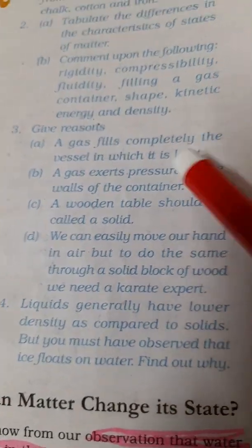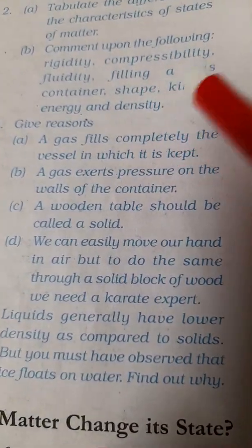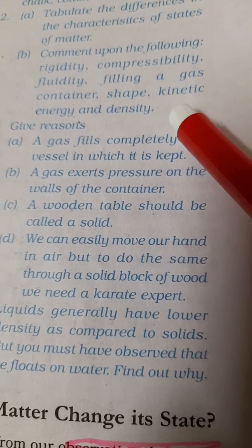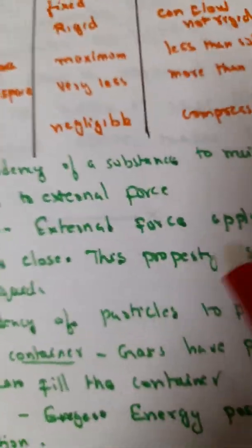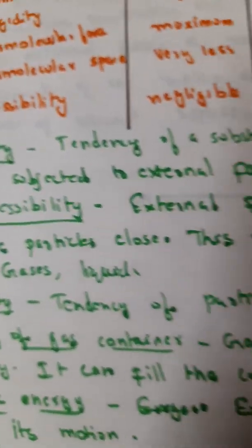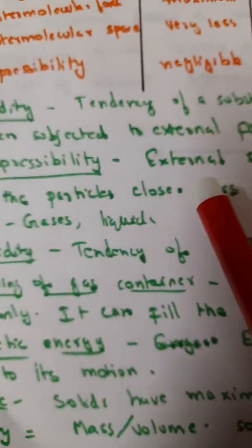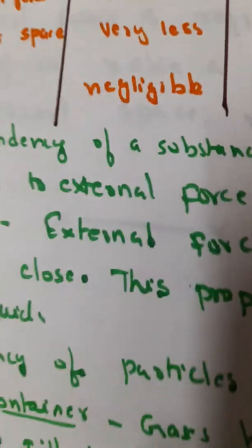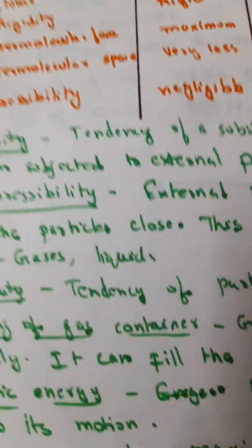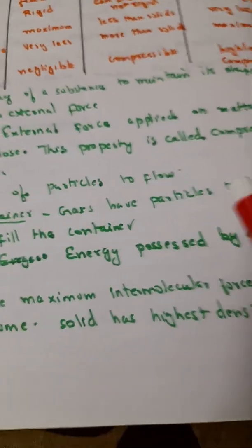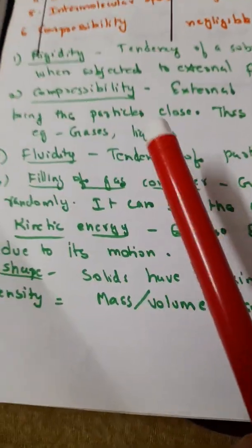Now we will move on to the next question. Second part, they are asking to comment on the following: rigidity, compressibility, fluidity, filling a gas container, shape, kinetic energy and density. See, what is rigidity? Rigidity is nothing but tendency of a substance to maintain its shape when subjected to an external force. If you apply a force to a substance, then the tendency of a substance to maintain its shape is called rigidity.